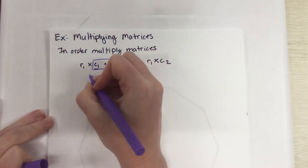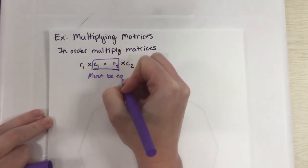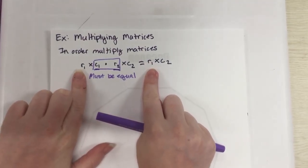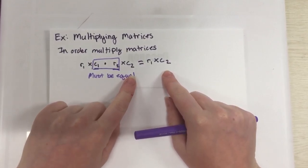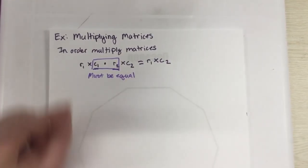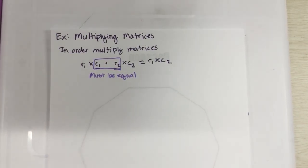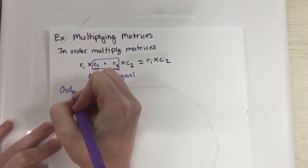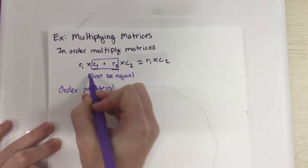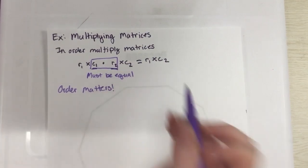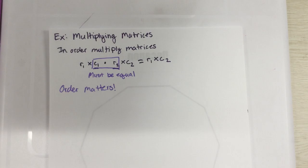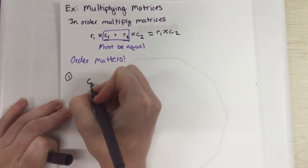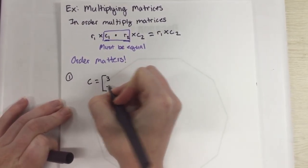If those inner values are equal, then my answer is what is left over — it's R1 by C2. Your answer matrix will have the number of rows the first one has and the number of columns the second one has. The key thing, which is really weird to us, is that everything so far with multiplication, order doesn't matter — four times six is the same as six times four. That is not true with matrices. Order matters. It's super important, and it's because of this rule — those inner dimensions must be equal. We're going to do the first one by hand and then show you how to do it on a calculator with the second one.